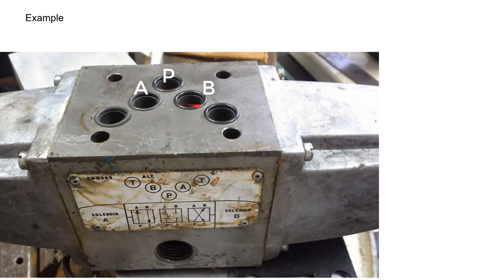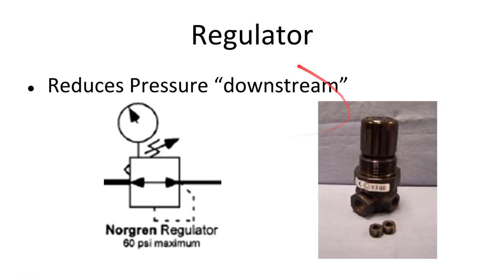In a pneumatic system there's a device called a regulator, which works similar to a pressure relief valve in a hydraulic system — it controls downstream pressure. The adjustable symbol means this can be adjusted: tightening the spring increases the downstream pressure.